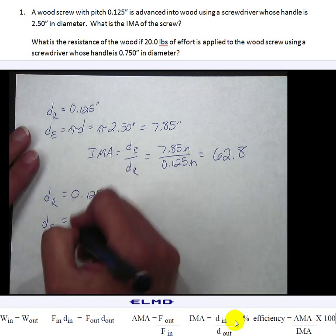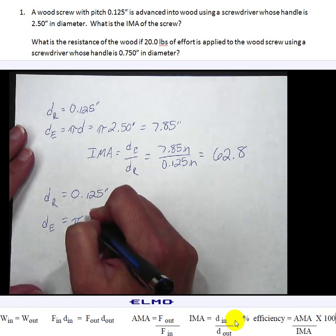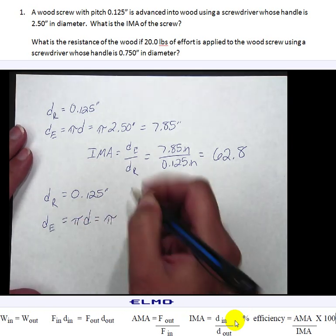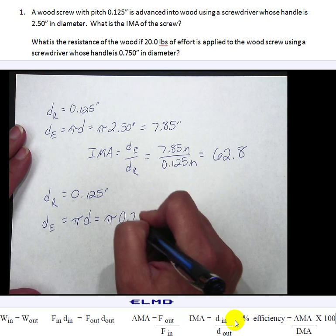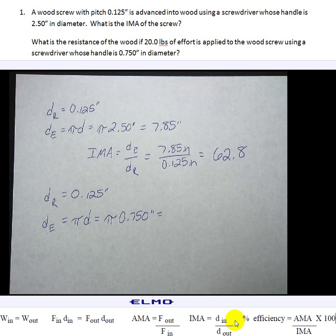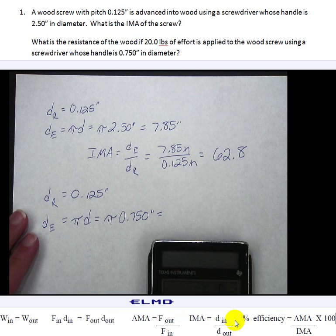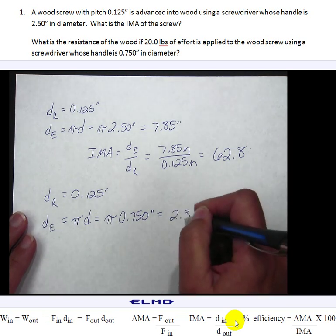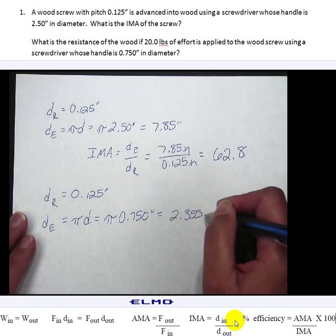So now the handle's circumference is going to be again still pi D. So it's pi times 0.750 inches which is a much smaller screwdriver. So I say 3.14 times 0.75 equals 2.355 inches.